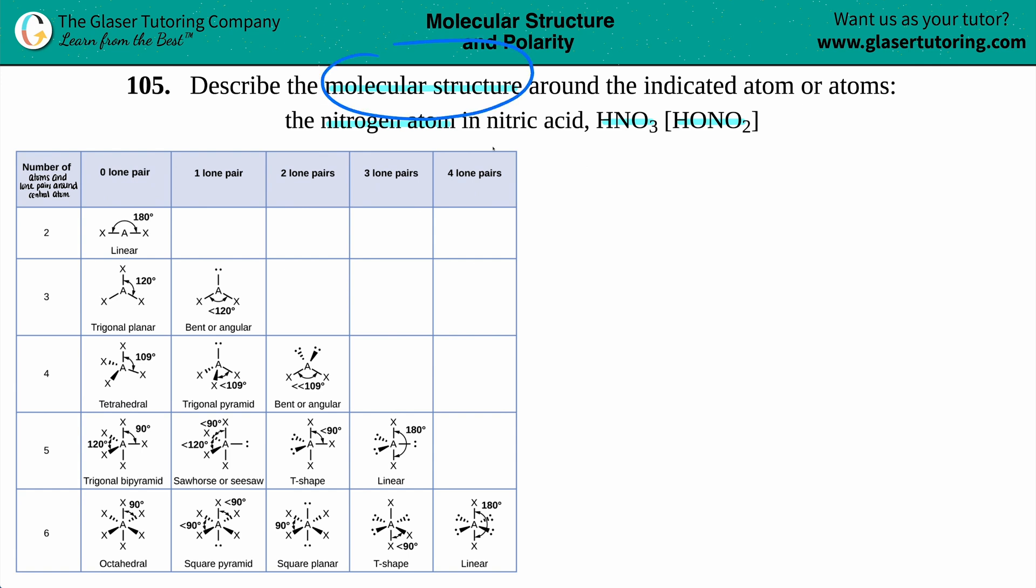Okay, so we have to find out the molecular structure, which is this big table over here. These are your different molecular structures, whether your atom is presenting a linear structure or a bent or a trigonal pyramid, sawhorse, seesaw, square planar, these are all the different types of molecular structures.